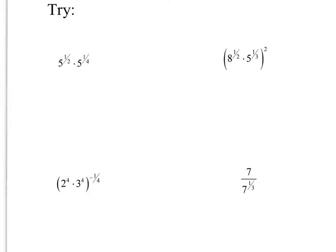But here, if I look at this, these are the same bases, and you add the exponents, so it will be 5 to the 1 half plus 1 fourth. Getting a common denominator, it will be 5 to the 2 fourths plus 1 fourth, gives me 5 to the 3 fourths. And I can't take the fourth root of 5, so I'm actually just going to leave it as is.